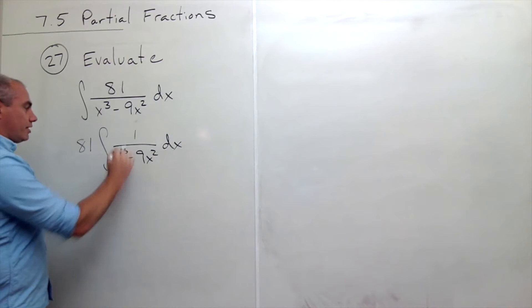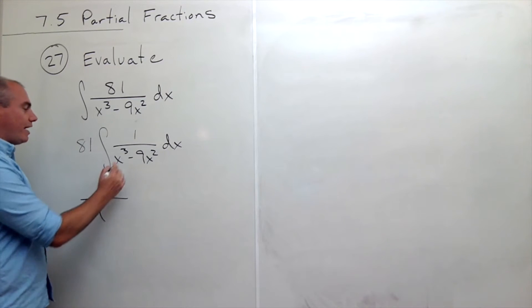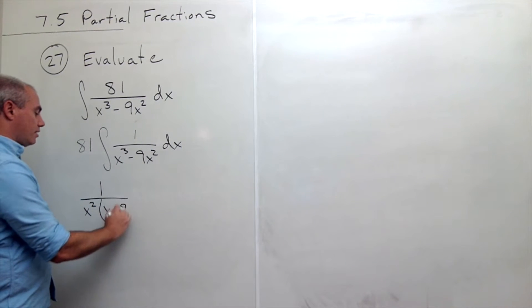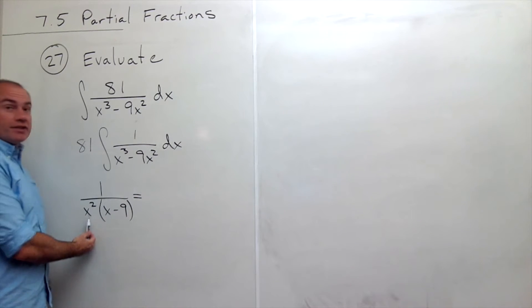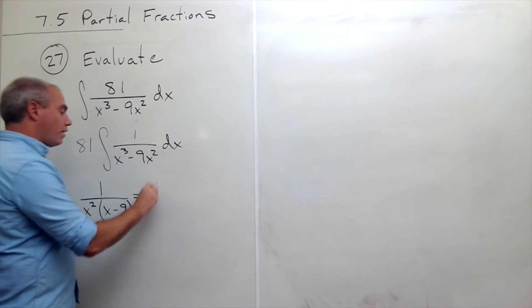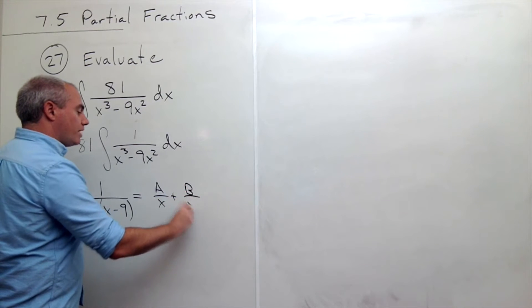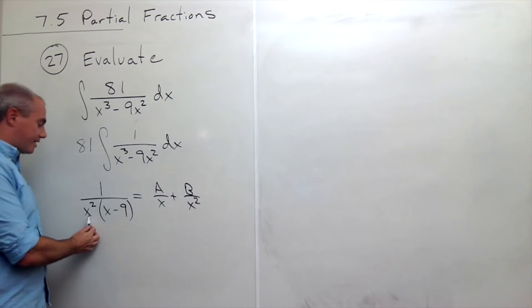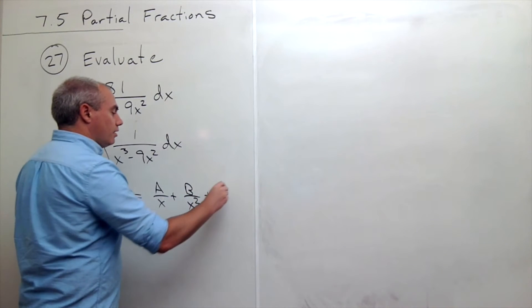Now let's factor this completely. So I get 1 over, I can factor out an x squared. If I factor out x squared, I'm left with x minus 9. So if I'm breaking this up into partial fractions, x squared is a linear term squared, so it gets two fractions: A over x and B over x squared. Then this other linear term, x minus 9, also gets a fraction, C over x minus 9.